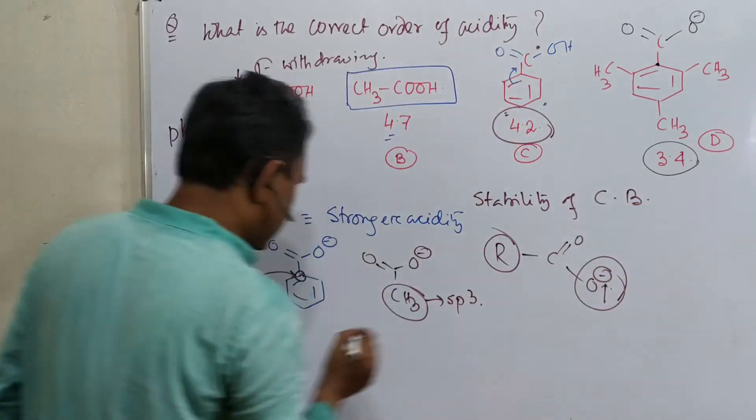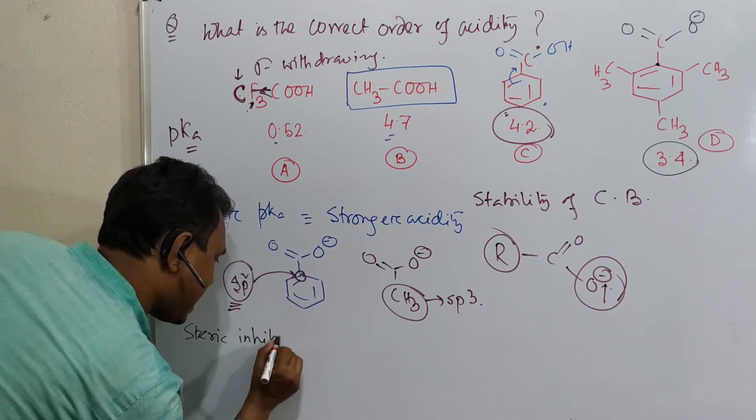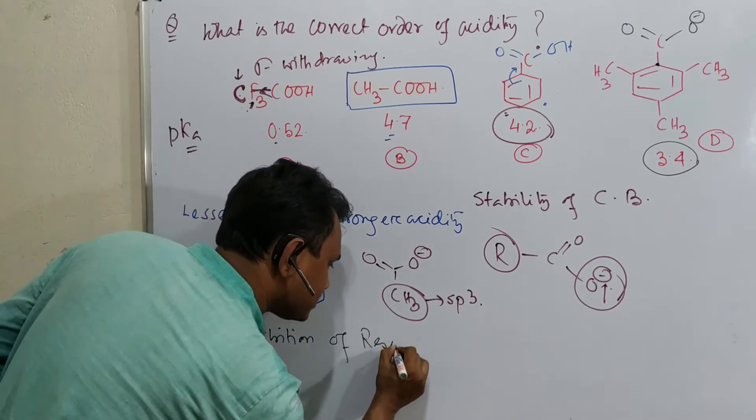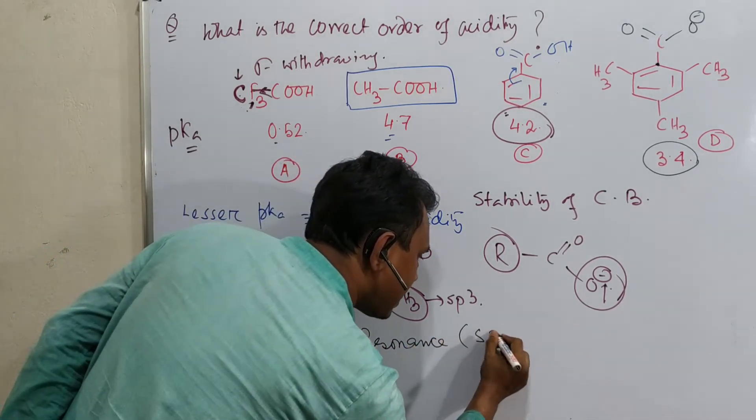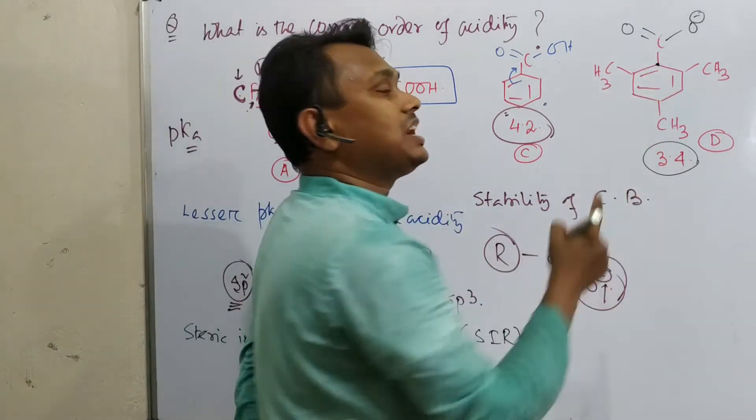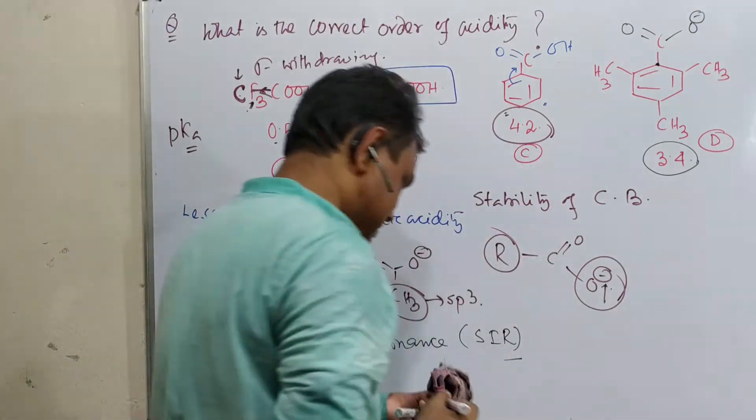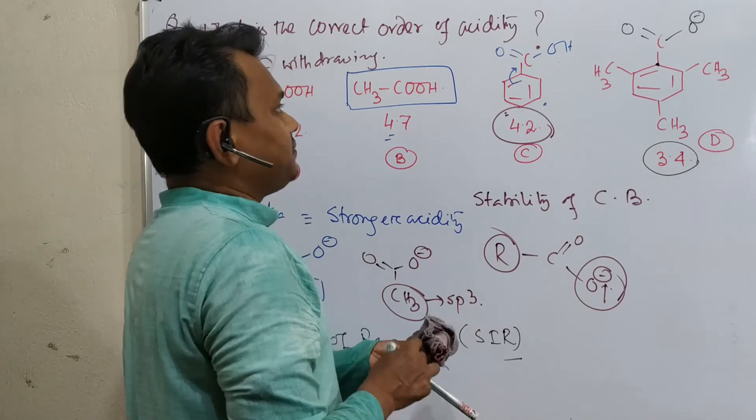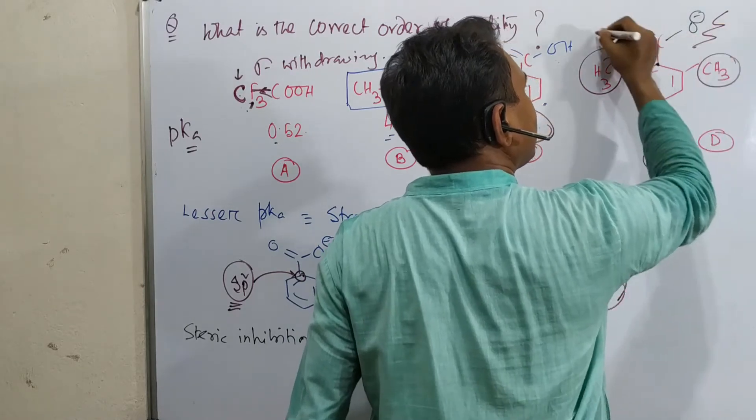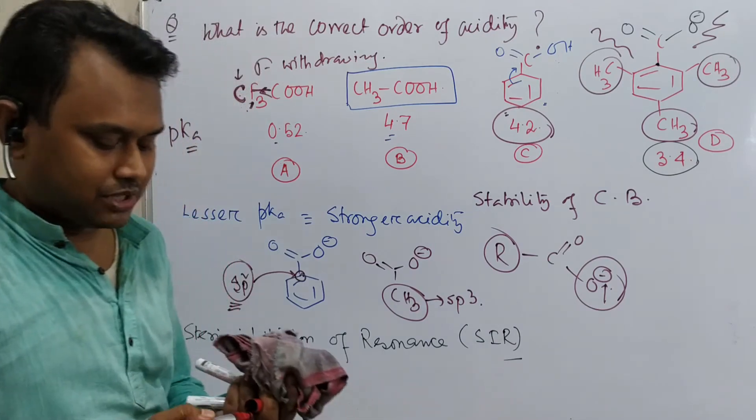That is because of one term, that is the steric inhibition of resonance, or SIR. And this is actually 2,4,6-trimethyl benzoic acid or mesitoic acid. I have discussed this. Please visit if you want to learn details. Now what happens? Because of this repulsive interaction, means this methyl and this methyl, severe repulsion between two. This one is a spectator, it doesn't have that much role.